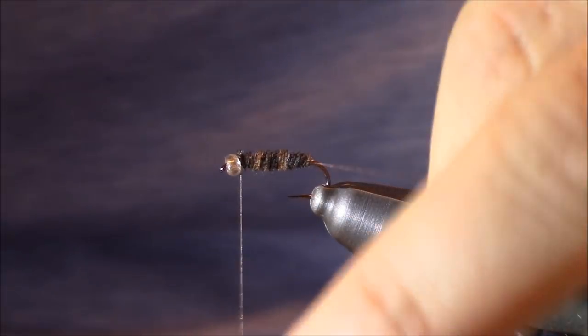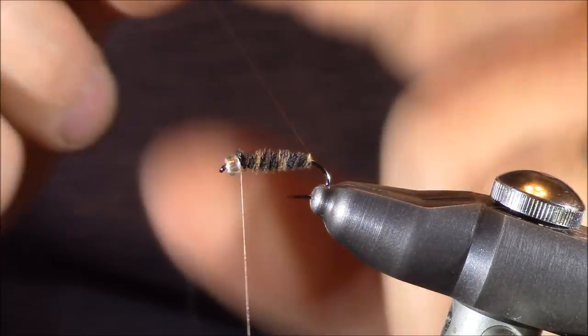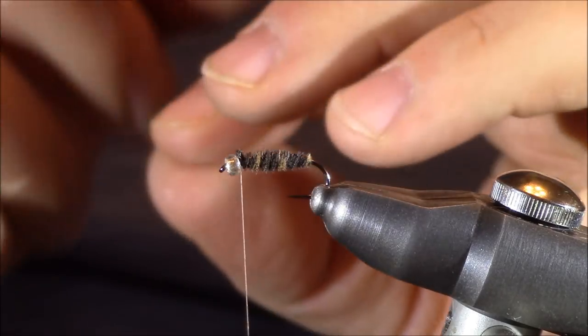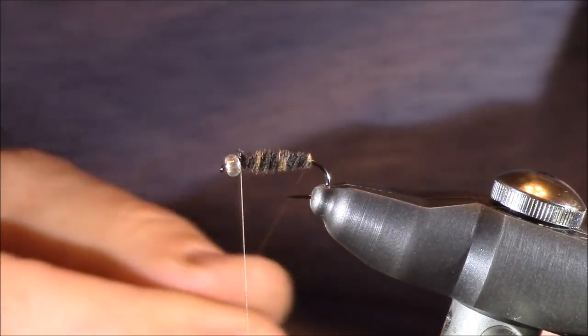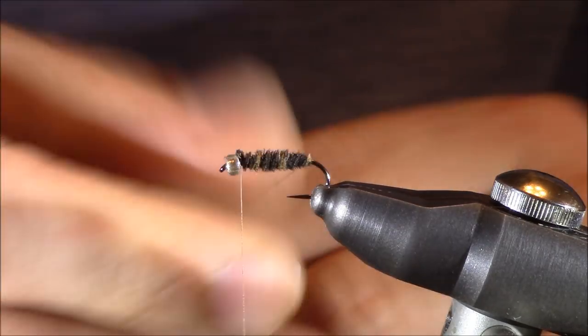So, this brown thread, I'm actually going to counter-wrap this because I want it to, number one, just create a little bit of ribbing, though ribbing is really not essential. I don't even know if it's relevant whenever we're talking about a cased caddis. However, when we're using this material, I want to secure the material.